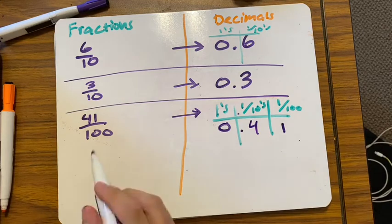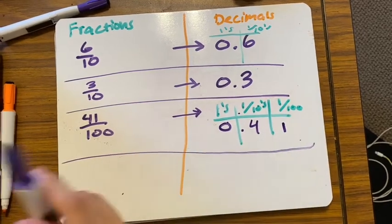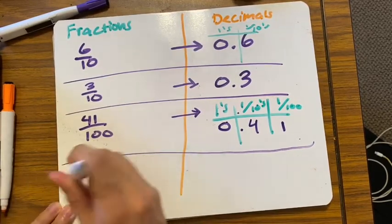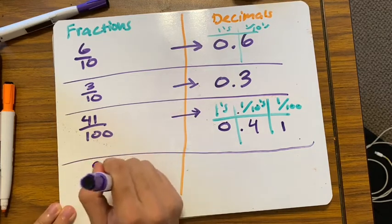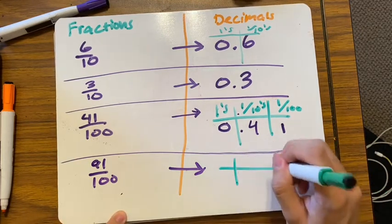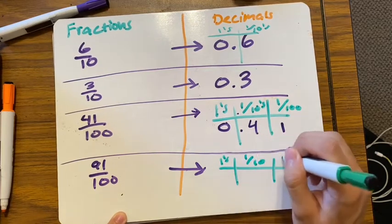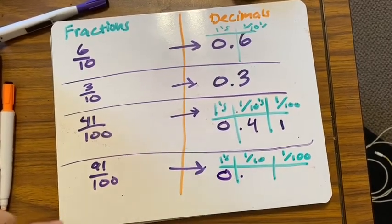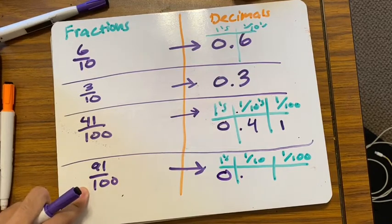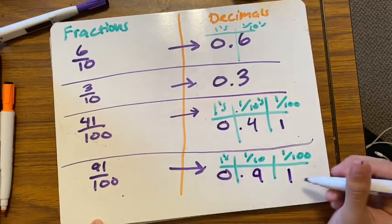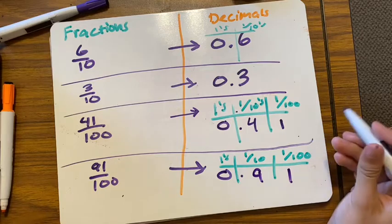So 41 hundredths is 0.41. Let's do another one: ninety-one hundredths. Make a place value chart. Do I have a whole number? No — so zero. I have 91 hundredths, so my number goes to the hundredths place. The answer is 0.91.